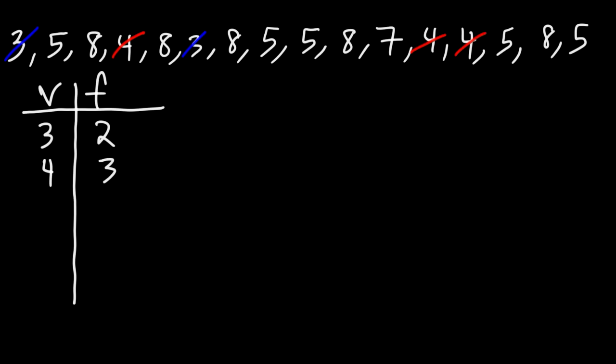Now let's move on to the next highest number. The next highest number is a 5, and we have one, two, three, four, five fives. I believe I counted all of them. Now the next highest value is a 7, and we only have one 7 in our data set.